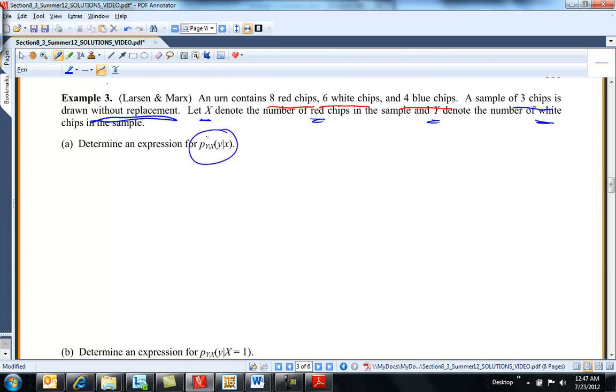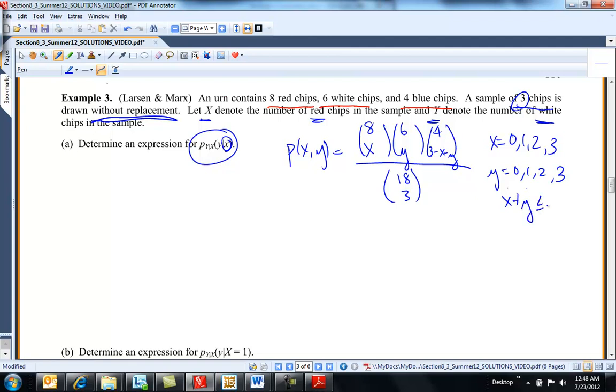So to get the conditional, I need the marginal of X and I need the joint. So the joint is, let me see, let's just build. We know there's three colors. How many total chips is that? 18, right? So 18 and we're choosing 3. And we have 8, 6, and 4. Let's see, X is the number of red. Y is the number of white. And then 3 minus X minus Y, right? Everybody left over, chips left over will be blue. X could be 0, 1, 2, or 3. Y could be 0, 1, 2, or 3. And together, they have to be less than or equal to 3.